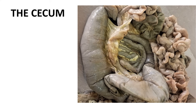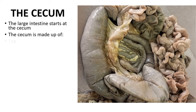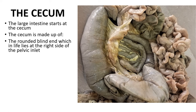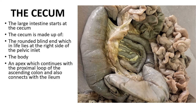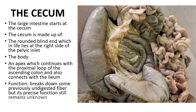I will start by describing the anatomy of the cecum, which is the beginning of the large intestine. The cecum is essentially a blind-ending pouch. It is made up of a rounded blind end, which in life lies at the right side of the pelvic inlet, a body, and an apex which continues with the proximal loop of the ascending colon and also connects with the ileum. The function of the cecum is to break down some previously undigested fiber, but its precise function still remains unknown.